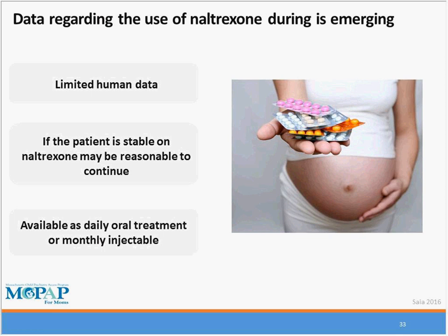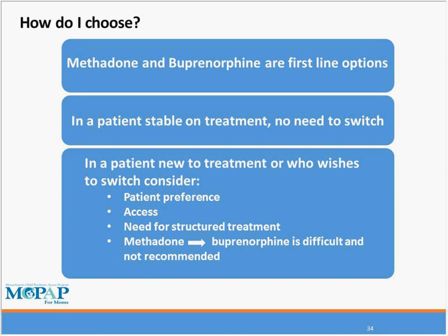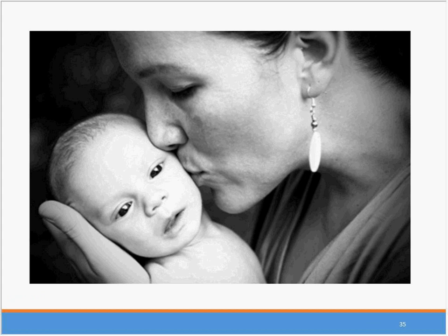Naltrexone is emerging as another treatment for opioid use disorder, with limited human data but potentially reasonable especially for someone already stable on it. When choosing a treatment, if someone is already stable — whether on naltrexone, methadone, or buprenorphine — it's really best not to switch during pregnancy. The choice then comes down to patient preference, access to care, and how much structure someone needs. Caution women who desire to switch from methadone to buprenorphine because of methadone's long half-life and pharmacologic characteristics that can make this transition quite difficult.